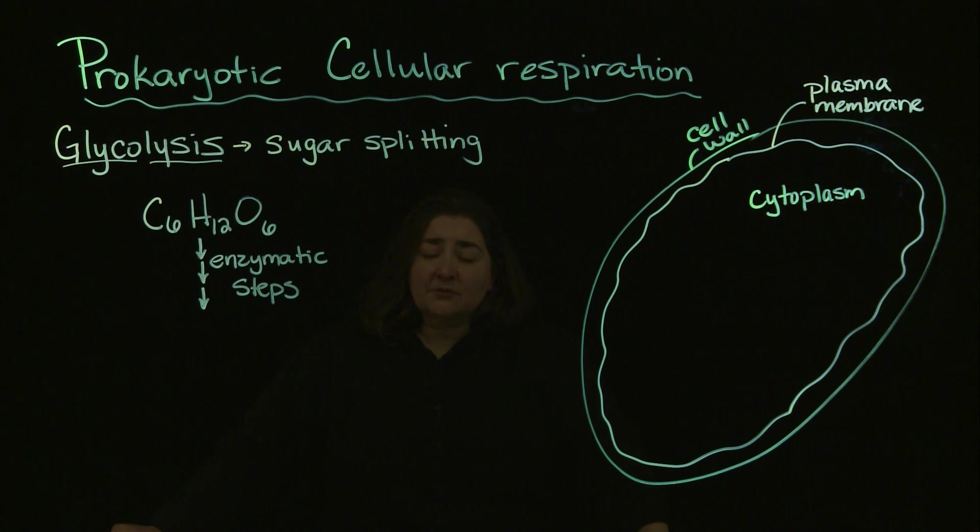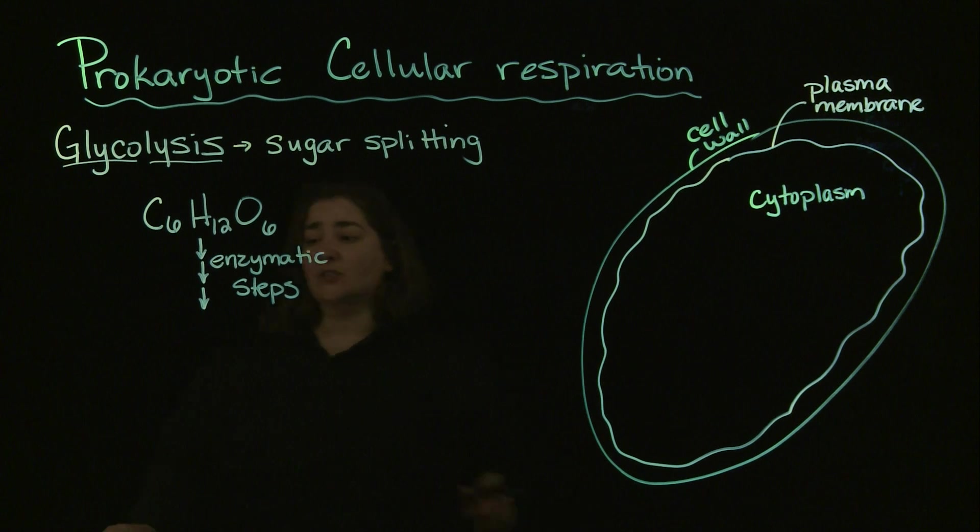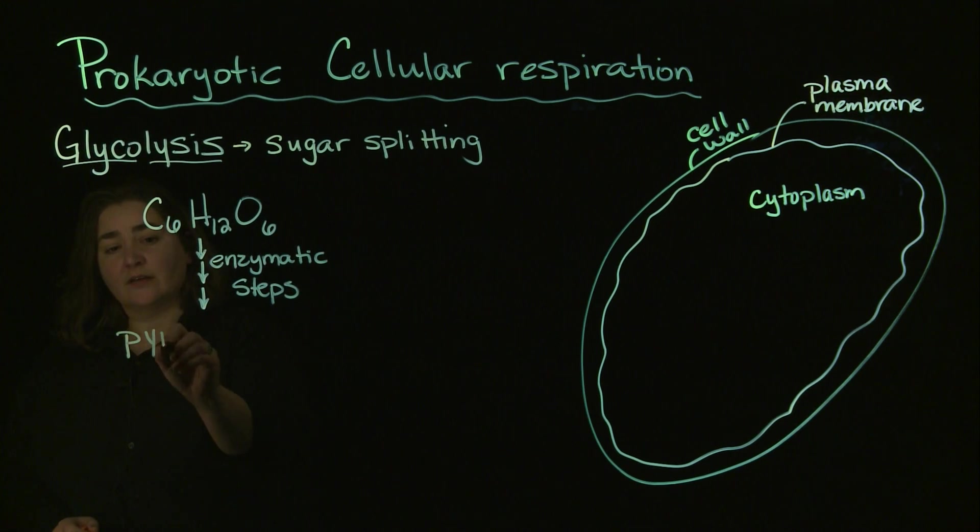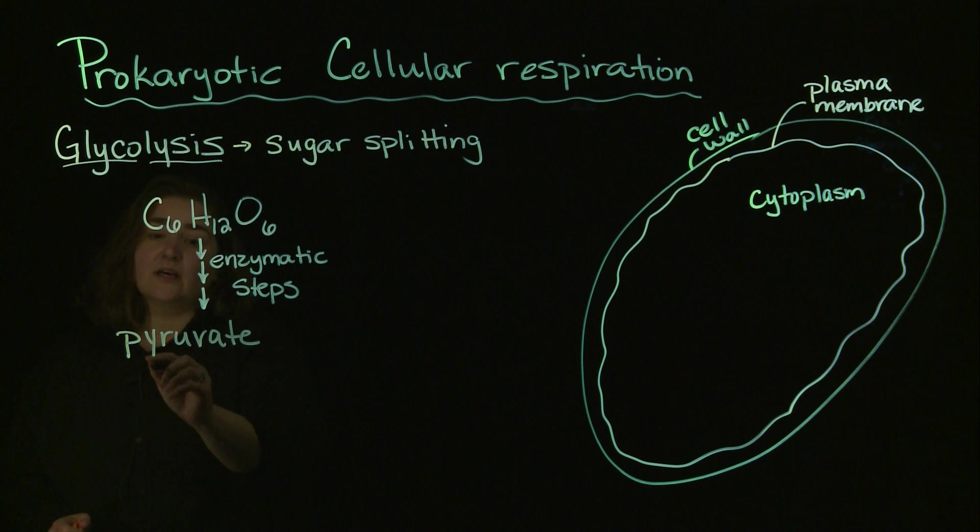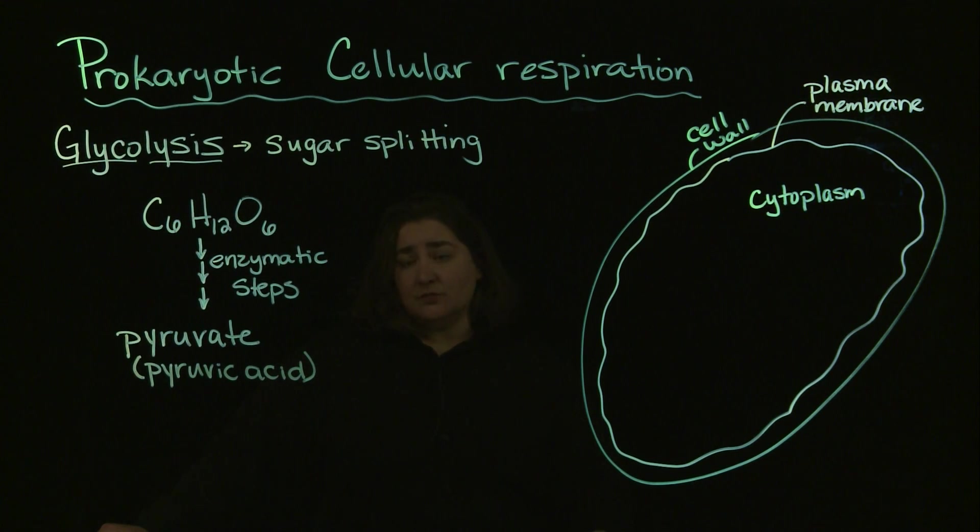I differ from some of my colleagues in that I don't think it's critical that you memorize every single enzyme that's responsible for breaking sugar down into pyruvate. You may also see this in your book as pyruvic acid. Either one of those are fine to use. But what I do want you to be aware of - there are a lot of enzymes that are necessary for that sugar to be split into pyruvate.